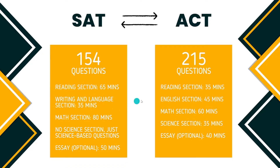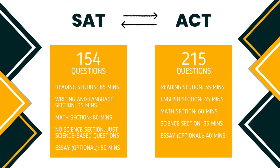The SAT writing and language section is basically asking you to be an editor — you'll need to fix mistakes in sentences and passages and revise them for improvement. The SAT math section will test your knowledge in topics such as algebra one and two, arithmetic, probability, data analysis, geometry, and trigonometry. It'll be divided into a no-calculator section with 20 questions in 25 minutes, and a calculator-allowed section with 38 questions in 55 minutes. Most questions will be multiple choice, but some require you to produce your own answers and mark them on a grid on your answer sheet.